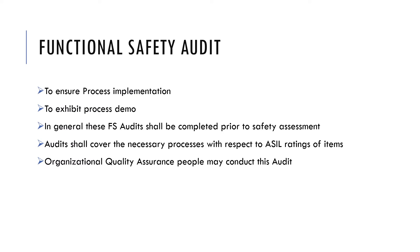The next concept is the functional safety audit. It is conducted to ensure process implementation — we need to demonstrate that the product or safety item is following the defined process. We need to demonstrate that the product is being developed with respect to functional safety. These functional safety audits shall be completed prior to functional safety assessment. Confirmation reviews and audits should also be completed before assessment, and there could be a series of audits in the middle of product development, just like regular project audits.